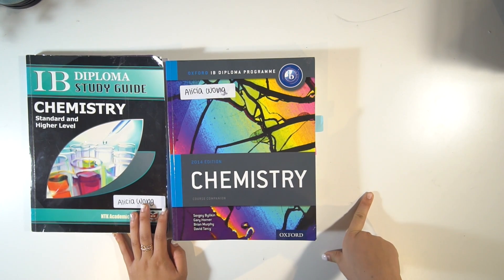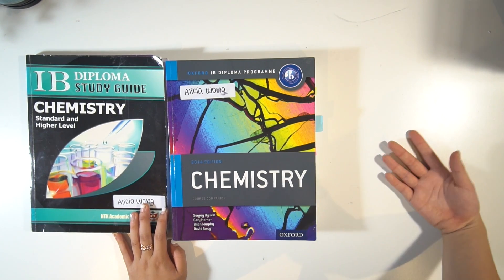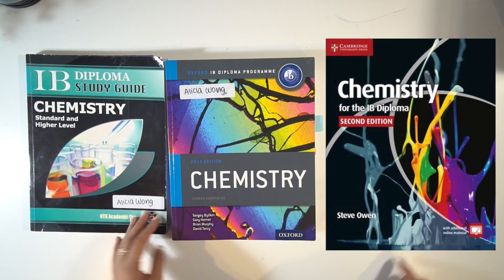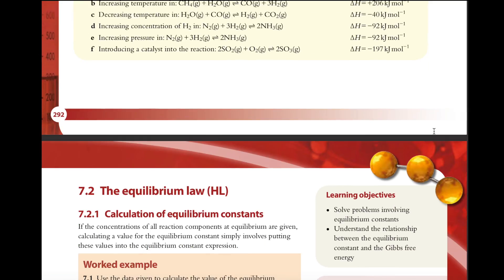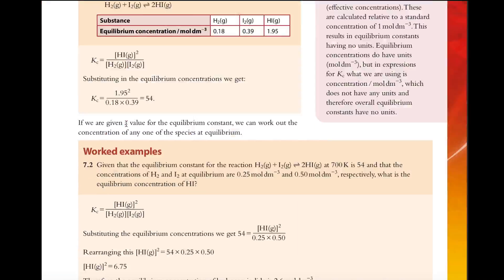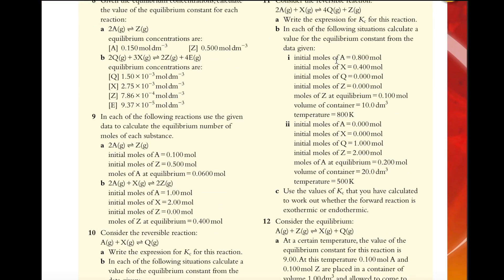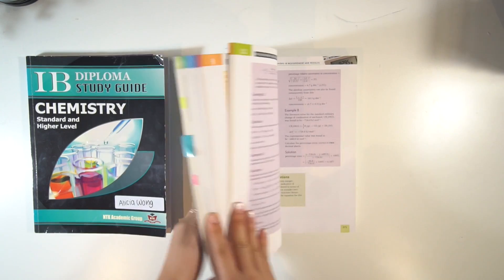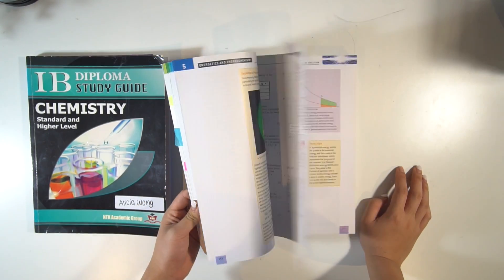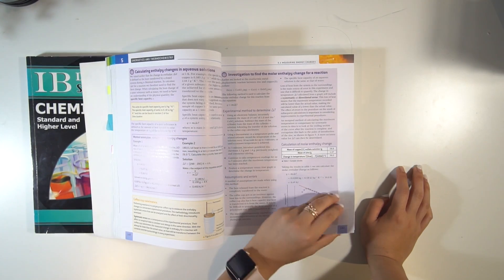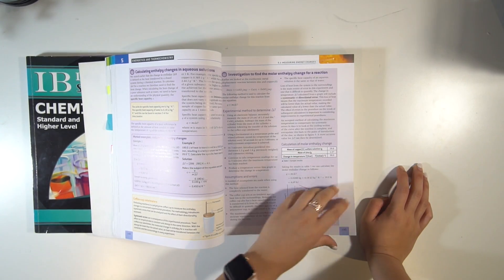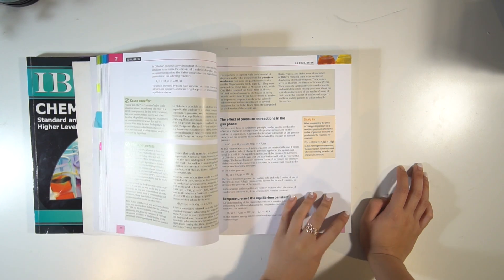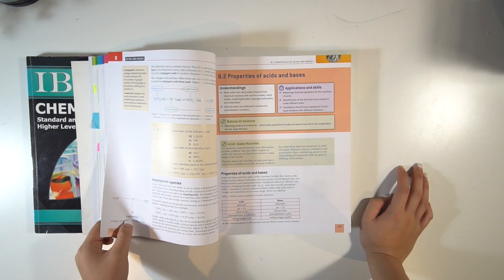As long as you keep your syllabus next to you and you're aware of what's still in the course, this textbook is really good. Another one that was helpful was the Cambridge Chemistry textbook — that one was good for having questions and worked examples within different subtopics. My teacher would sometimes set it as homework, or I'd look through it if I was unsure of a specific subtopic. The Oxford Course Companion I didn't really touch — there was too much writing and it went on too long for me.